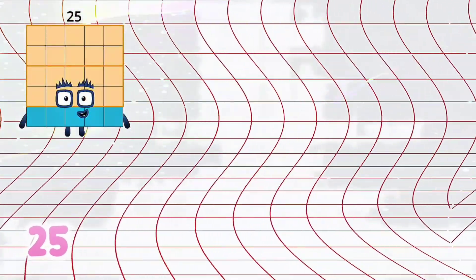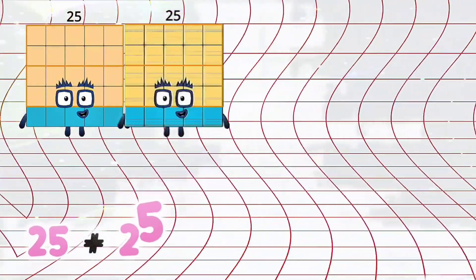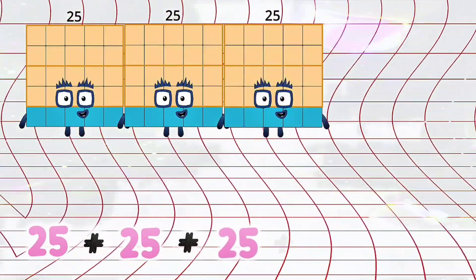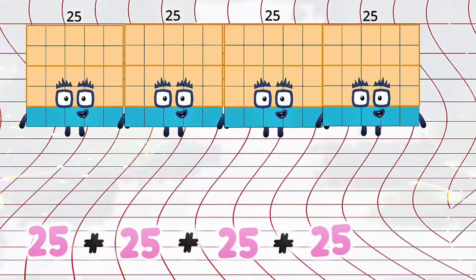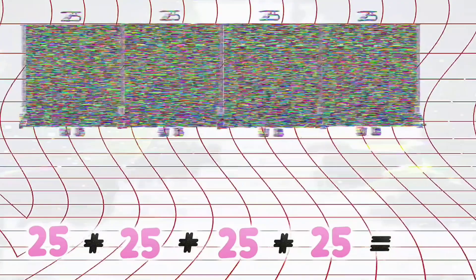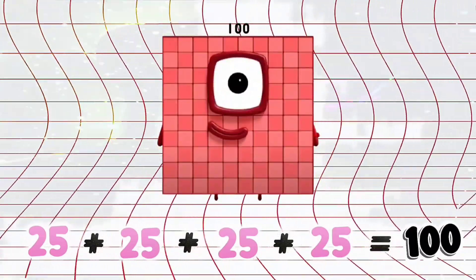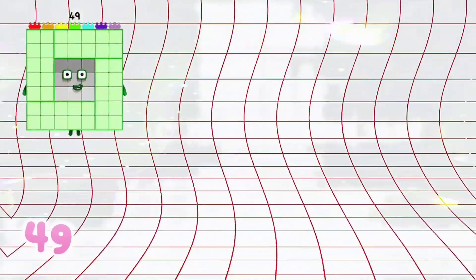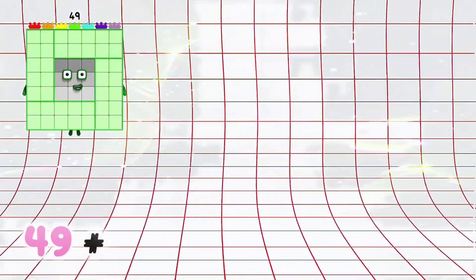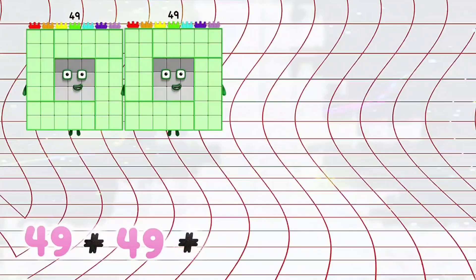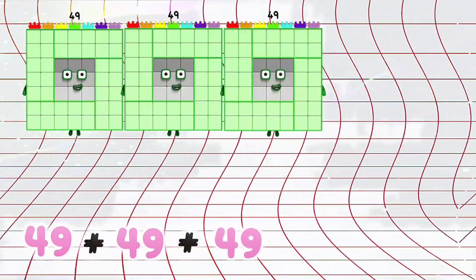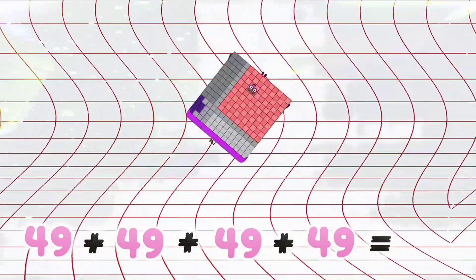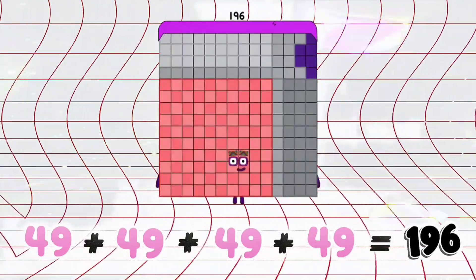25 plus 25 plus 25 plus 25 is equals to 100. 49 plus 49 plus 49 plus 49 is equals to 196.